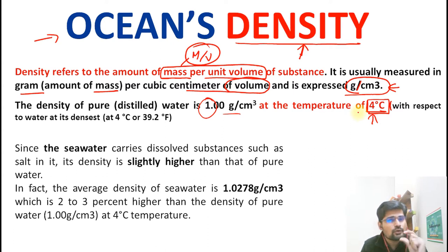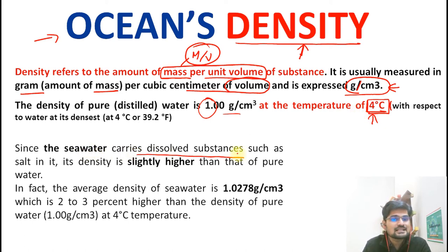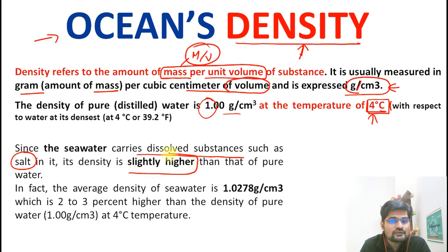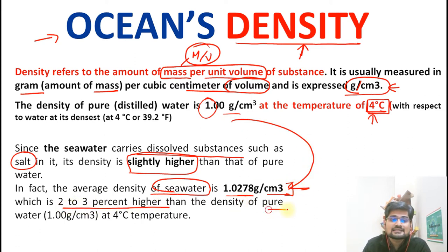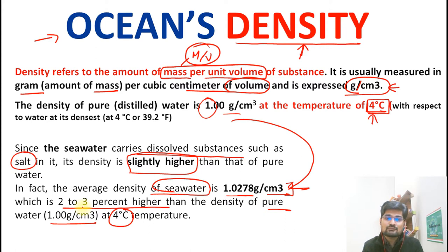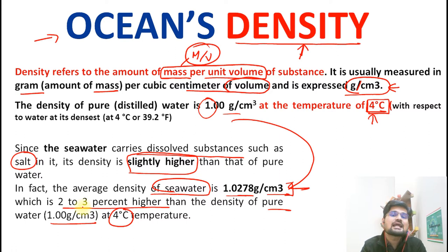If we compare distilled water to salt water, seawater carries dissolved substances, so its density is higher than pure water. The average density of seawater is 1.0278 gram per cubic centimeter — about two to three percent higher than the density of pure water at the same temperature of four degrees C. As water becomes more impure with dissolved substances, density increases.